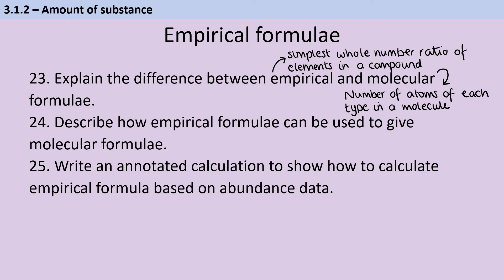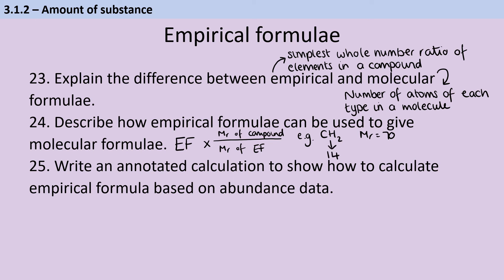First, work out the conversion factor — how many times bigger is the relative formula mass of the molecular formula compared to the relative formula mass of the empirical formula? For example, if the empirical formula is CH₂ and the compound has a relative formula mass of 70: the relative formula mass of CH₂ is 14, and 70 ÷ 14 = 5. So I need something 5 times bigger than my empirical formula — multiplying CH₂ by 5 gives C₅H₁₀.